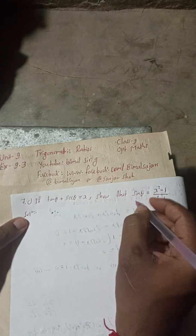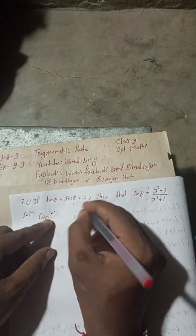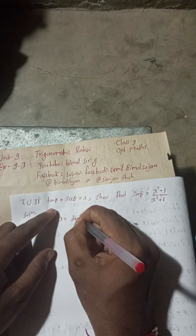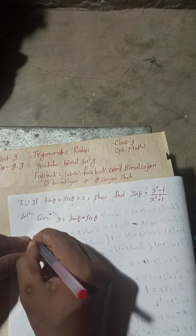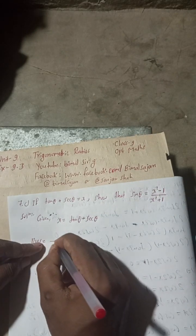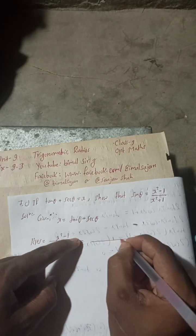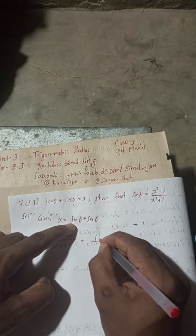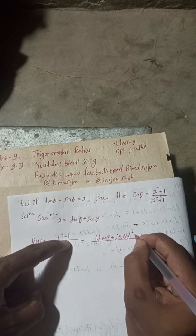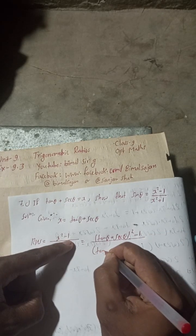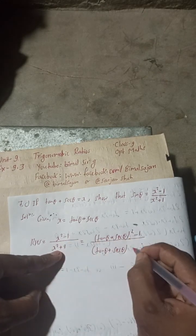Solution: here it is given that tan θ + sec θ = x, that is x = tan θ + sec θ. Now I will take the RHS. RHS = (x² - 1) / (x² + 1). Substituting the value of x, this becomes (tan θ + sec θ)² - 1, divided by (tan θ + sec θ)² + 1.